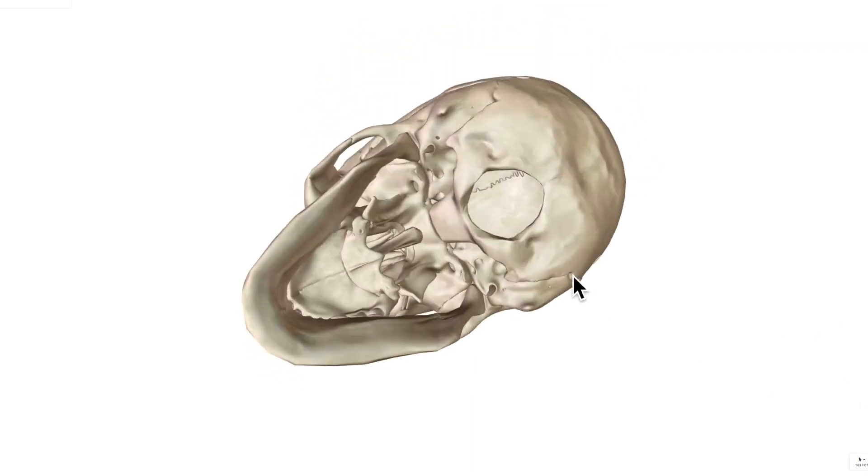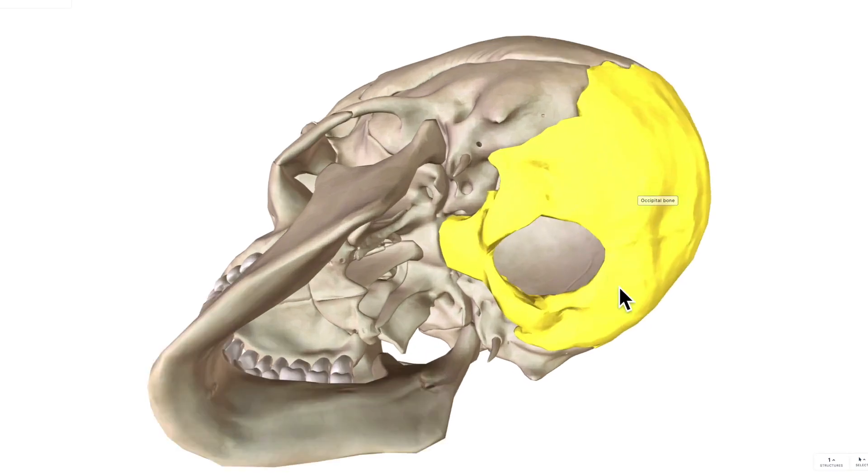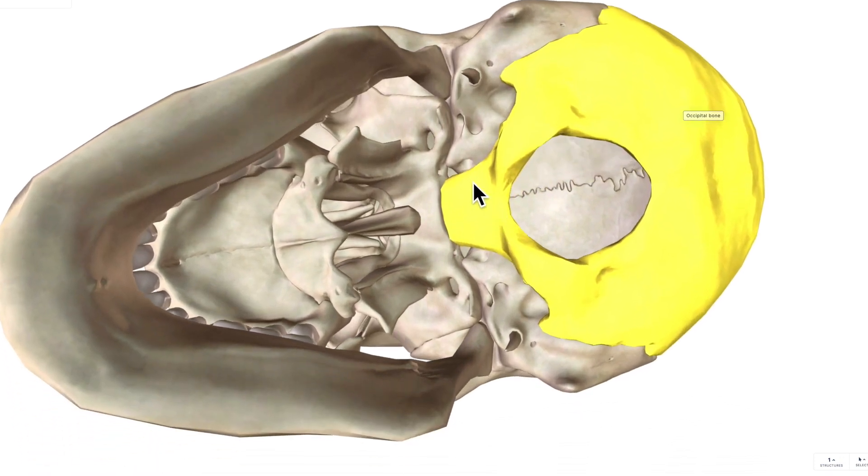We can see our foramen magnum of the occipital bone much easier now. And also what we can see coming down this region here is going to be the base of the occiput, so the base of the occipital bone just in that region there.